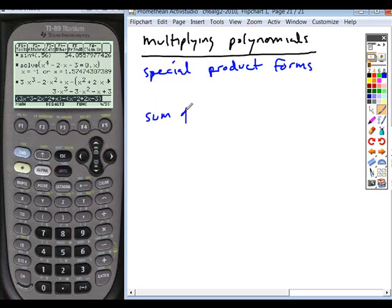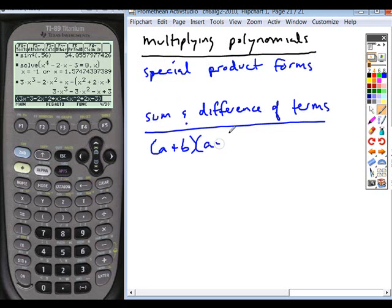The first is the sum and difference of terms. If you have two factors that are the sum and the difference of the exact same terms, if you were multiplying these out, you'd foil it, right? And you'd get the outer and inner products that cancel each other. So the shortcut for this is you can just take the first term, square it, subtract the square of the second term, and you have your solution.